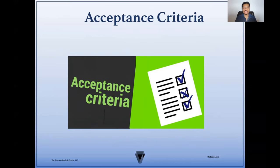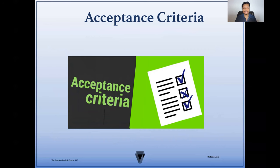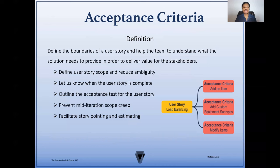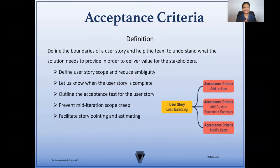Now let's take a closer look at acceptance criteria. Acceptance criteria define the boundaries of a user story and can help the team understand what the solution needs to provide in order to deliver value to the stakeholders. Acceptance criteria define the user story scope and reduce ambiguity by decomposing that user story, letting us know when the user story is complete. It also outlines the acceptance test for the user story, and it can prevent mid-iteration scope creep. Acceptance criteria also facilitate story pointing and estimating — it can be very difficult to size or point a story if you don't have the acceptance criteria to let you know what's involved.